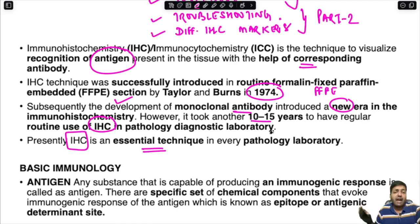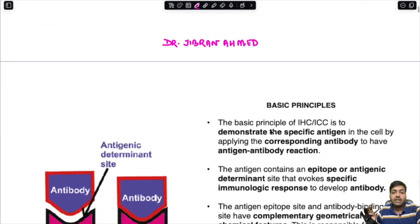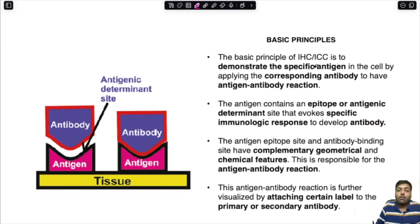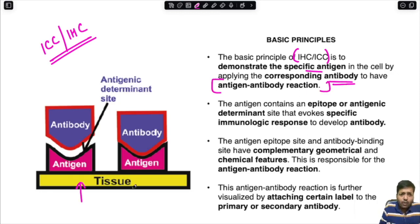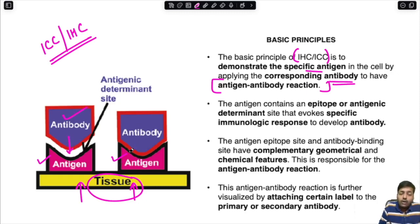Before going into details, we must understand the basic principle of IHC/ICC: to demonstrate the presence of a specific antigen in the cell by applying the corresponding antibody to have an antigen-antibody reaction. In the tissue there is an antigen, and that antigen binds with a particular antibody. The antibody will bind only if the corresponding antigen is present; if the antigen is absent, the reaction is negative.